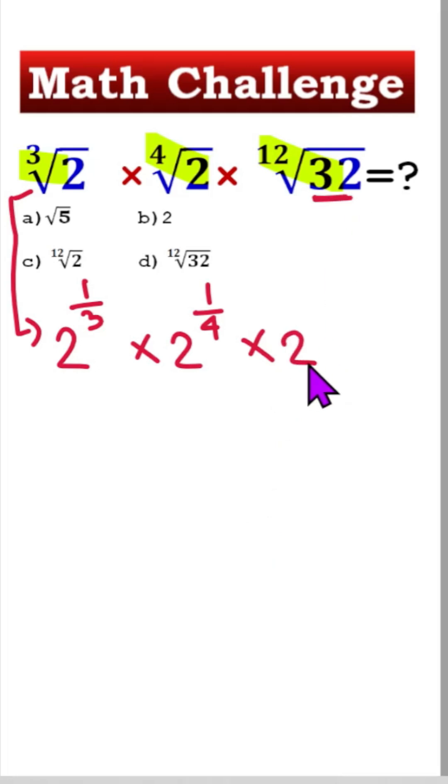So we can write 2 to the power 5, and here is 12th root, so it will be times 1 by 12, right.